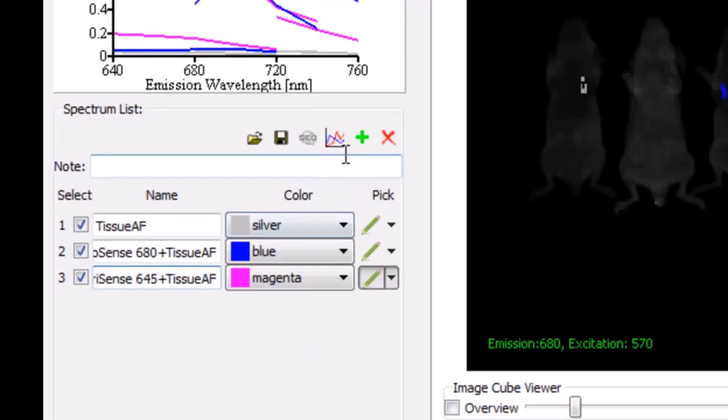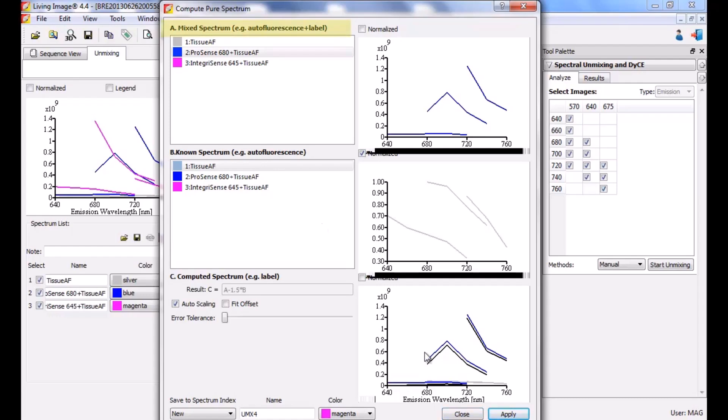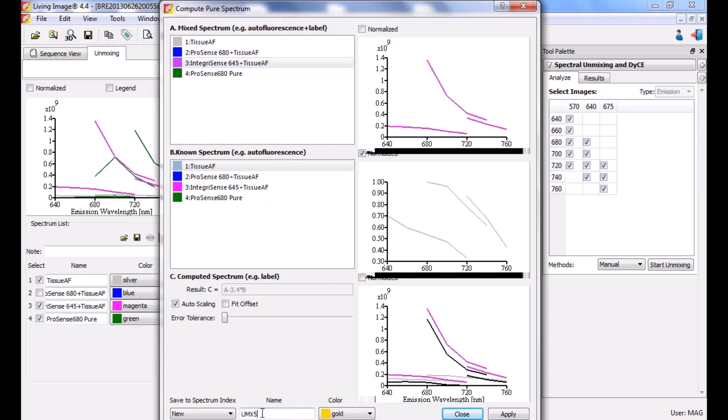We have two goals: one, to separate the 680 and 645 probes, and two, to separate tissue autofluorescence from both probes. To lend specificity to the unmixing so that the autofluorescence will unmix from the probes, we need to perform component subtraction to generate three pure components. Click the compute pure spectrum button. The compute pure spectrum window opens and asks for input. Section A contains mixed spectra and section B contains the known spectra or tissue autofluorescence. We will subtract B from A to generate pure probe components. Select the 680 probe in section A and tissue autofluorescence in section B. Name the pure probe at the bottom and click apply. Repeat this process for the 645 probe.